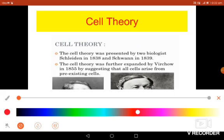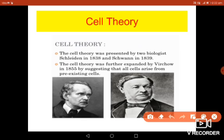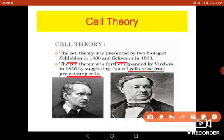This theory was further extended by Virchow in the year 1855. He said that cells arise from pre-existing cells. Earlier, people thought that organisms appeared spontaneously in nature, but this theory proved that cells arise from a pre-existing cell — the cell divides into new cells and from that life begins. This is how the cell theory was established by Schleiden and Schwann in 1838–1839 and further explained by Virchow in 1855.